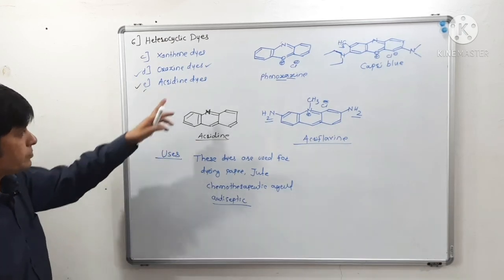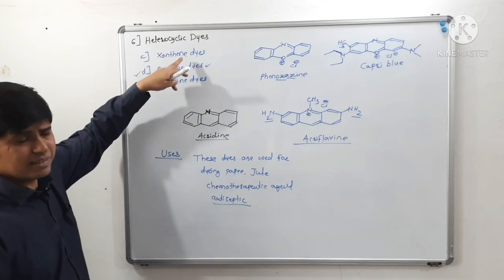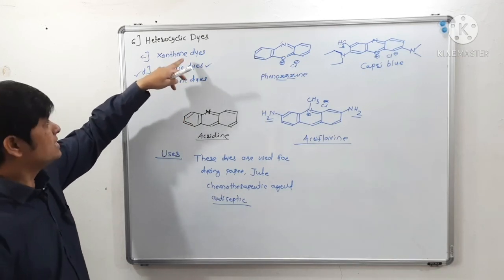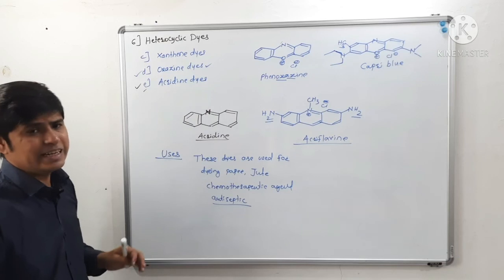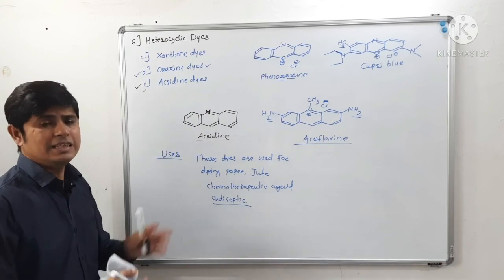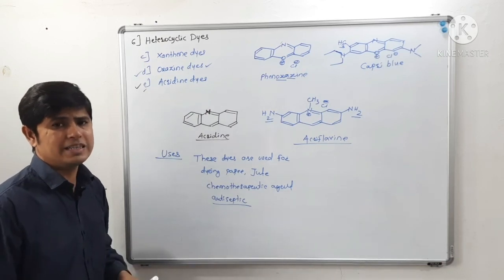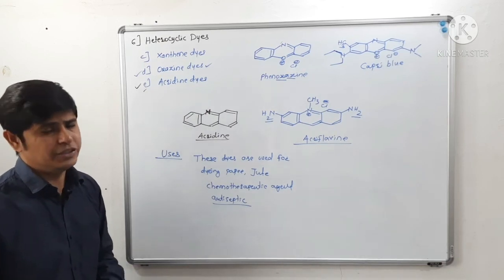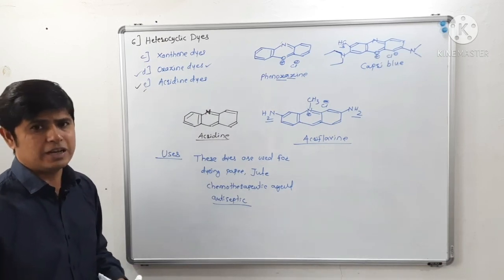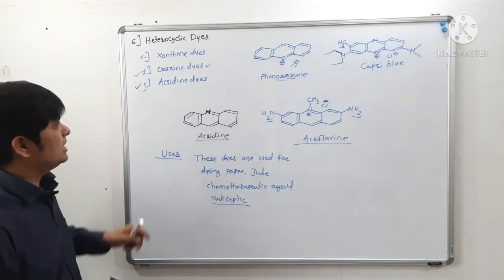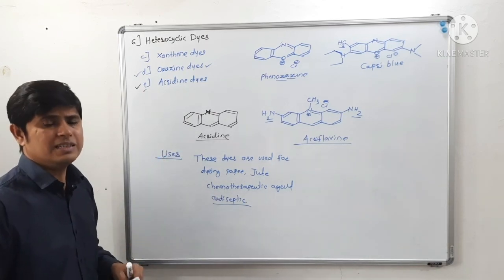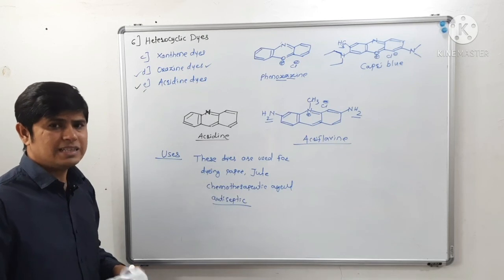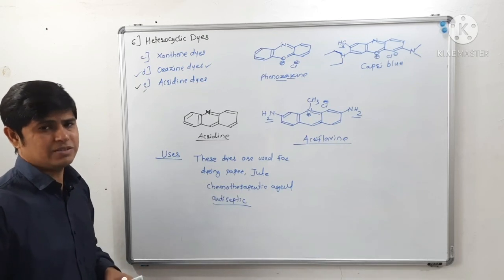So with today's lecture, we have completed xanthin dyes, oxazine dyes, and acridine dyes. This heterocyclic class of dyes is finished here. In the next lecture, we will see another class of dyes. Thank you very much.